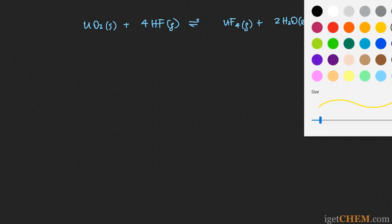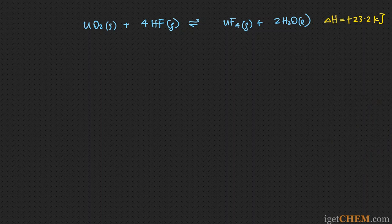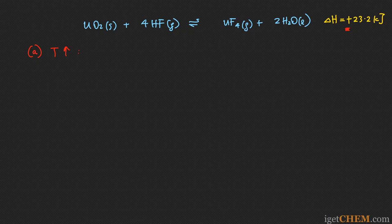Part A: what will happen when you increase the temperature? If you look at the delta H of this reaction, it has a positive sign. That means the reaction is endothermic — meaning you have to supply energy to the reaction for it to go to the right.